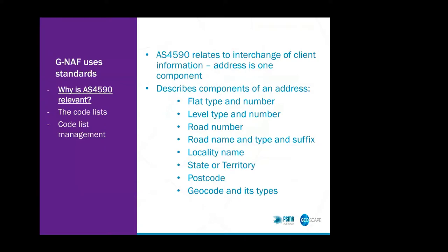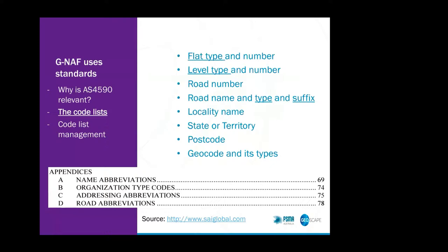Talking about standards and linking them to code lists: we have a set of standards that we comply to. One of these is a standard called AS4590, which relates to the exchange and interchange of client information. The standard defines the set of components of an address, which includes things like flat type and number, level type and number, road number. It also includes geocode and its types, which include things like front centre setbacks and parcel and property centroids. A few of these are listed as code lists. Appendix C describes a code list for flat types and level types, and Appendix D covers road types and road suffix abbreviations.